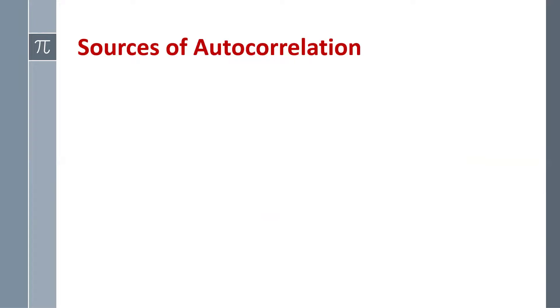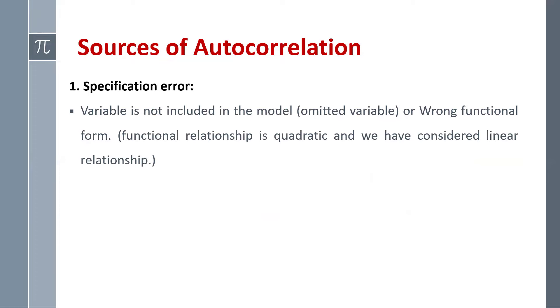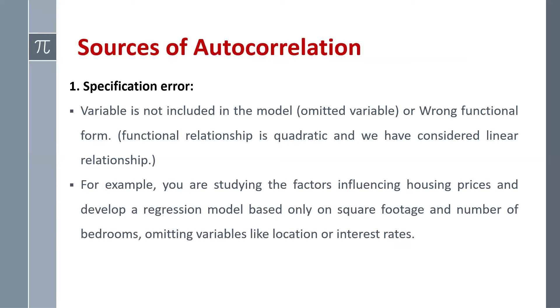Now what are the sources? Why do we have this problem? First is specification error. If an important variable is not included in the model or our functional form is wrong, then we have this kind of problem. For example, we are studying the factors influencing housing prices.